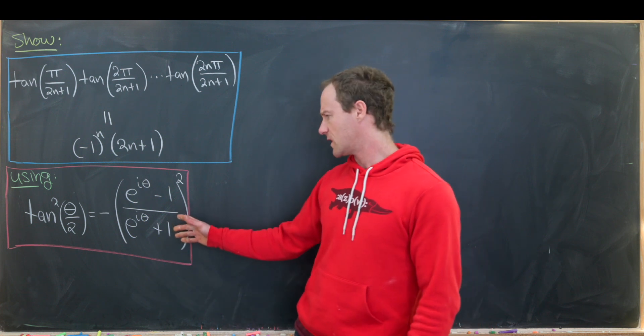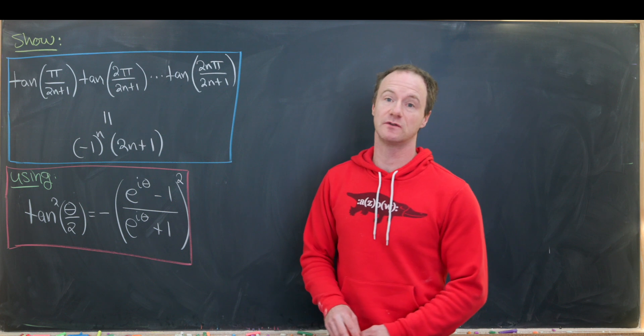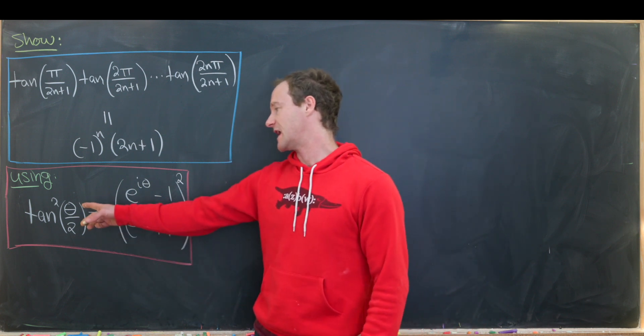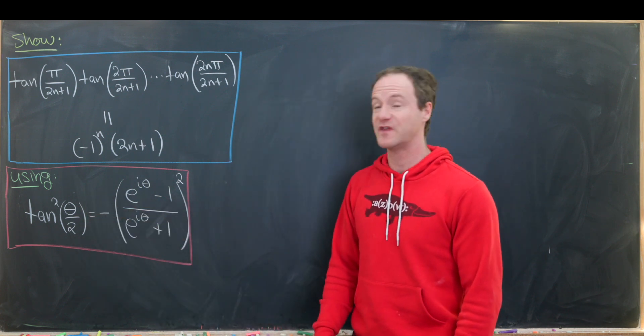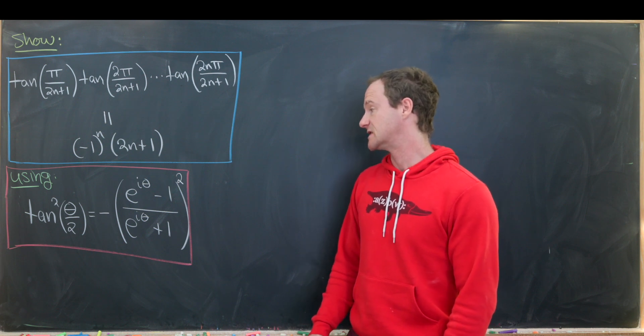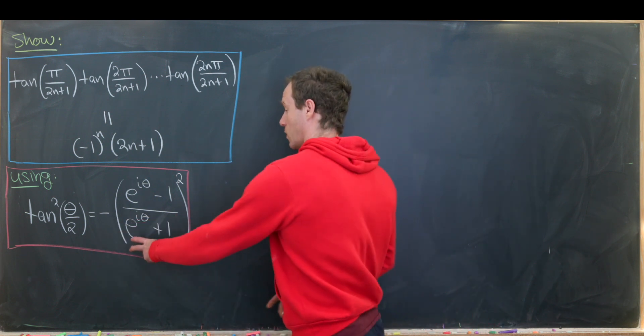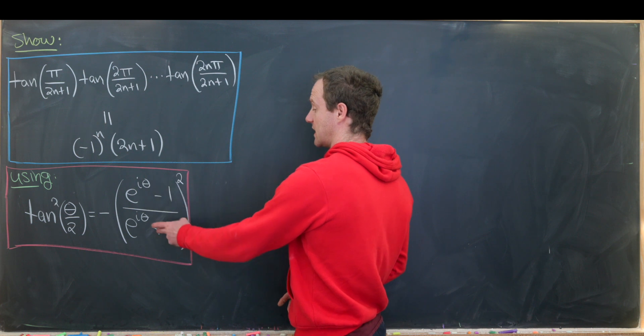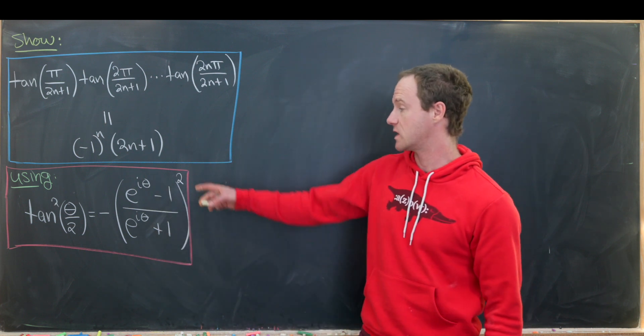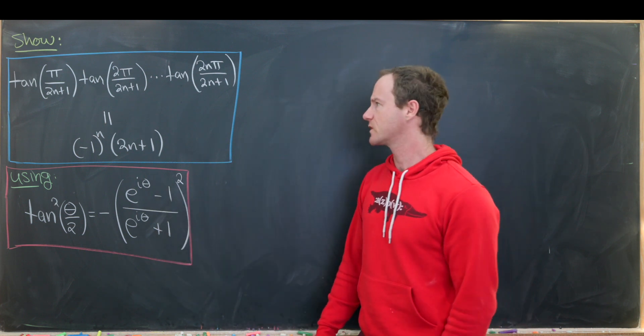And we'll use the following complex exponential formula for the tangent function and that is that the tangent of θ over 2 is the same thing as minus the quantity e to the iθ minus 1 over e to the iθ plus 1 squared. Okay so let's get to it.